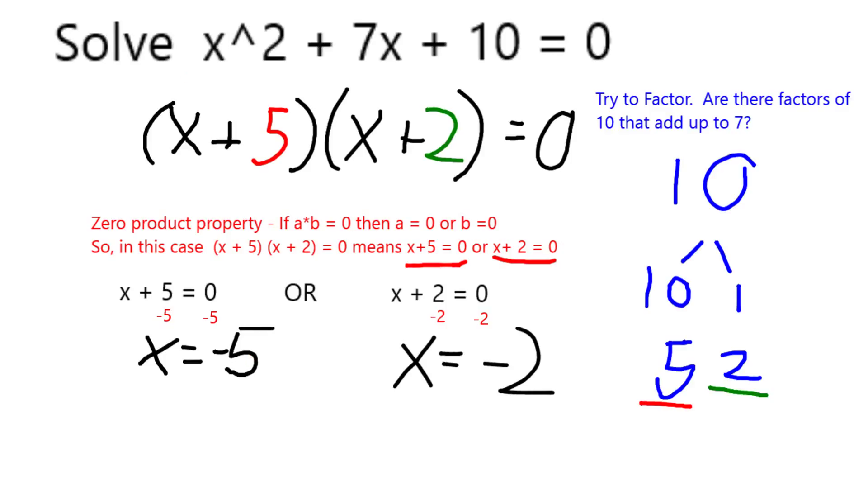For example, negative 5 squared is a positive 25 plus 7 times negative 5 would be negative 35, which gives me negative 10, and negative 10 plus 10 is equal to 0. You'll see the same thing would work with negative 2 as well.